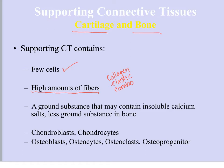In some cases like in bone, the ground substance is going to have calcium salts in it, and this is really what makes bone hard. You're going to have less ground substance in bone than you would in cartilage, but both cartilage and bone are going to have really high amounts of fibers.